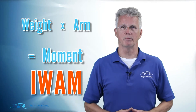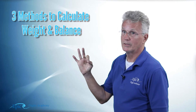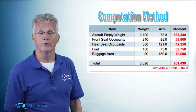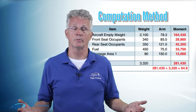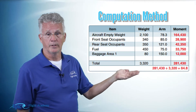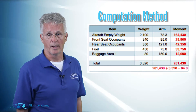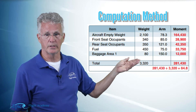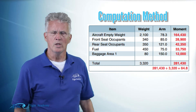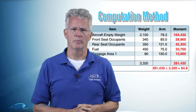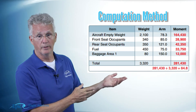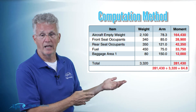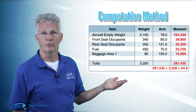When we calculate weight and balance we basically have three ways to do it. The first method is the computation method, which simply means making those computations. You can see we have items here: the aircraft empty weight at 2,100 pounds, front seat occupants, rear seat occupants, etc. Each item has a weight and that weight has an arm from the datum. In our example, baggage area 1 has an arm of 150 inches from the datum.